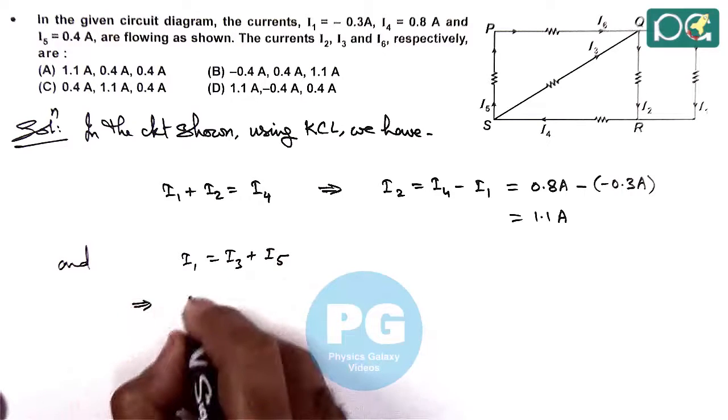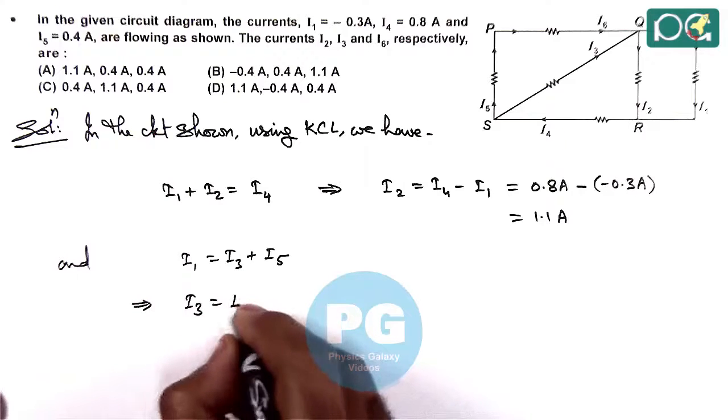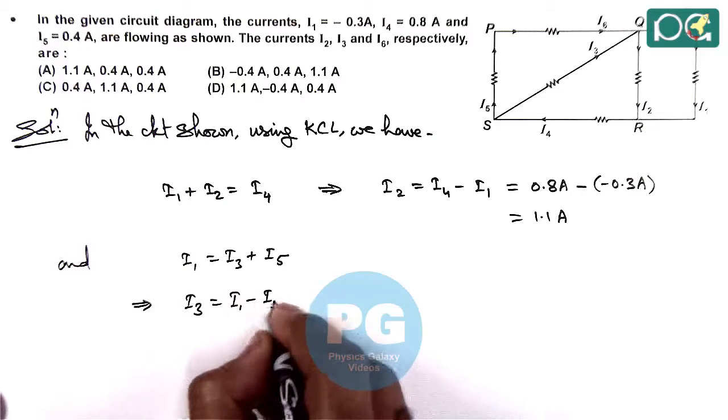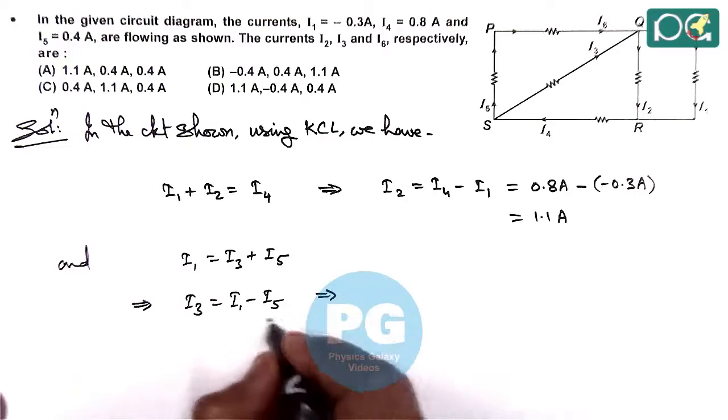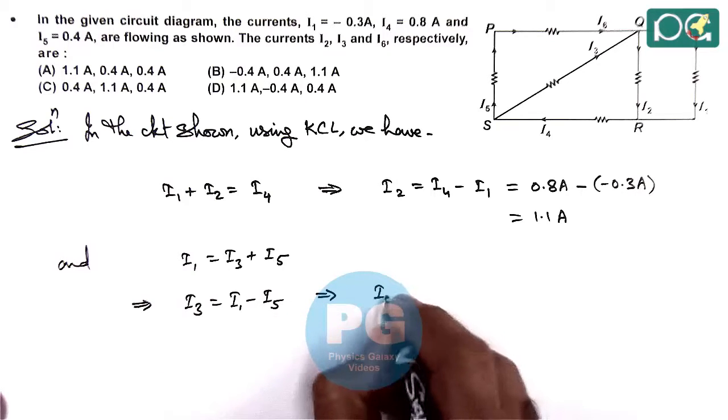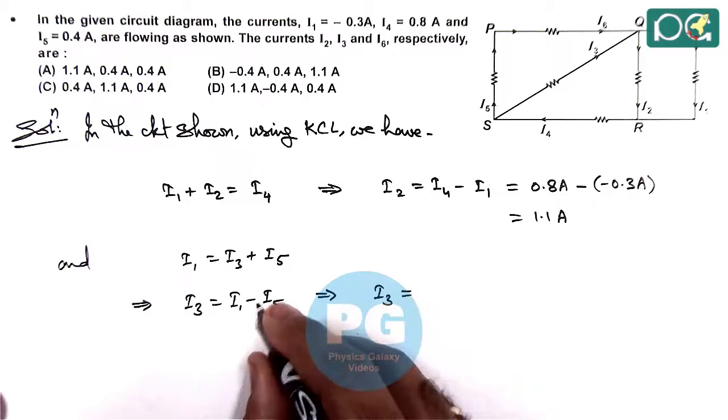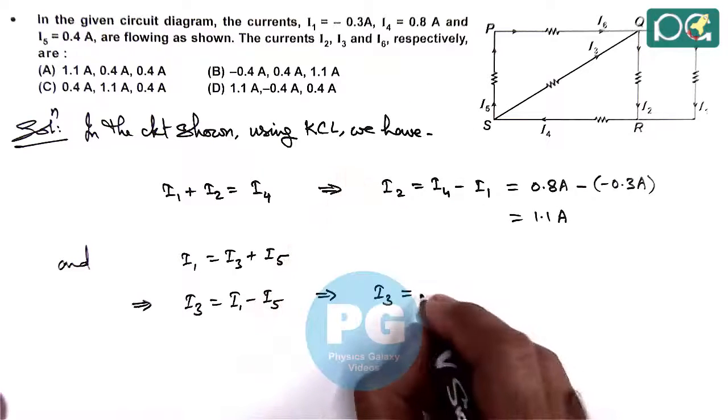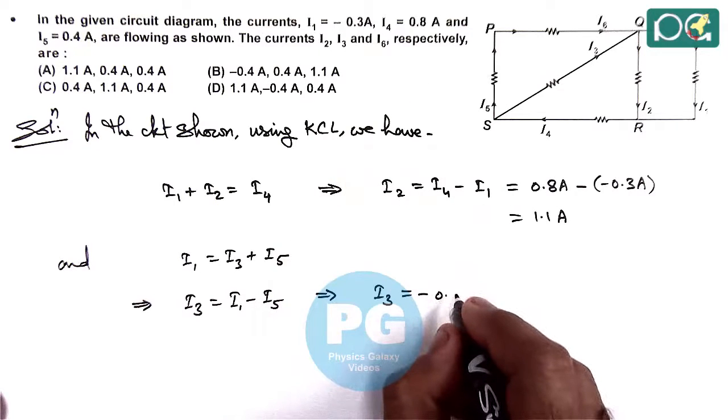So here the value of i3 we are getting is i1 minus i5. So if we substitute the values of i1 and i5, the value of i1 is minus 0.3 ampere.